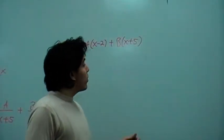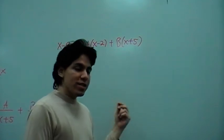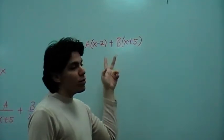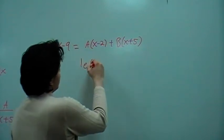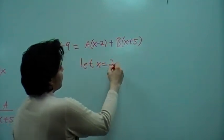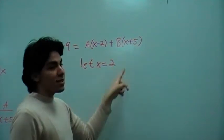From here, we're going to make x equal a value so this way we can take out a variable either A or B, whichever of your choice. We'll say that x equals 2 so the A will fall out and then we can substitute 2 wherever x is.